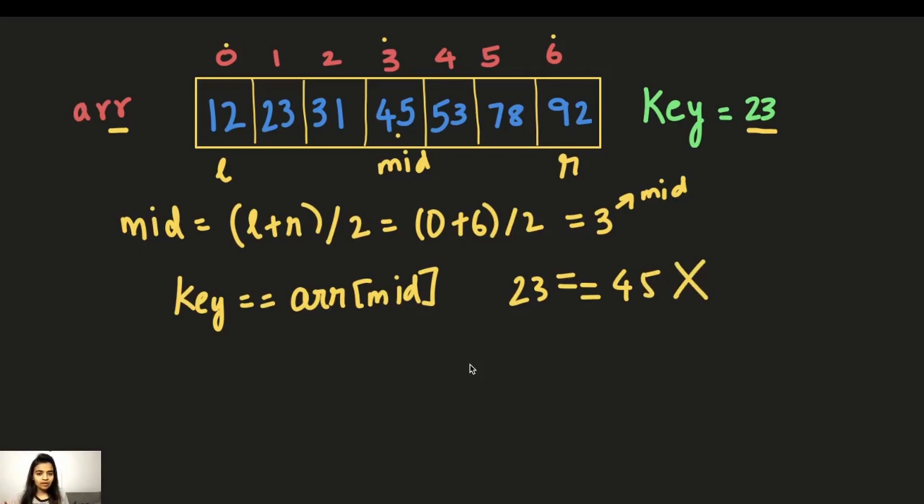So the next step what we do is we check if this key is lesser than or greater than the middle element. If the key is lesser than the middle element, then we just consider this left part of the array. Or if the key is greater than the middle element, we consider the right part of the array.